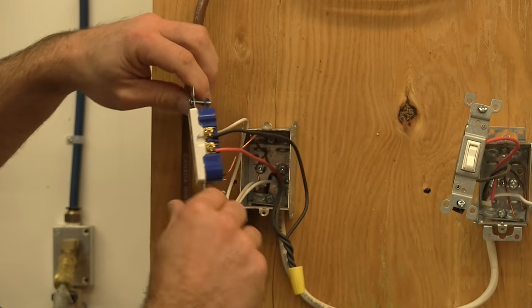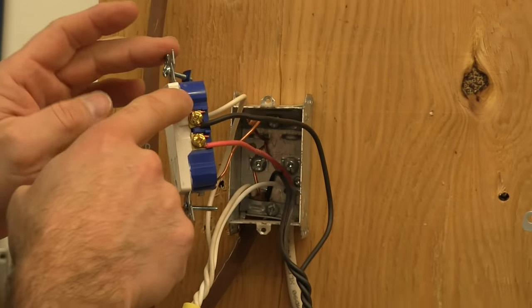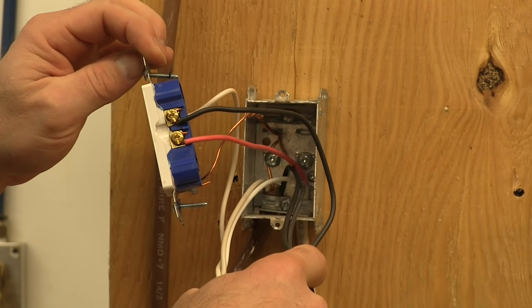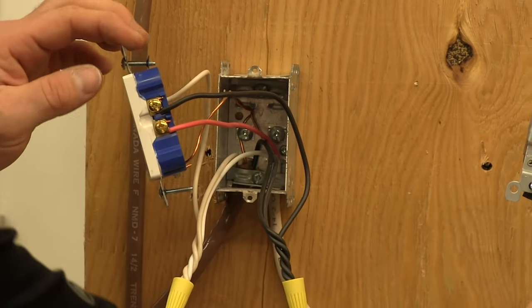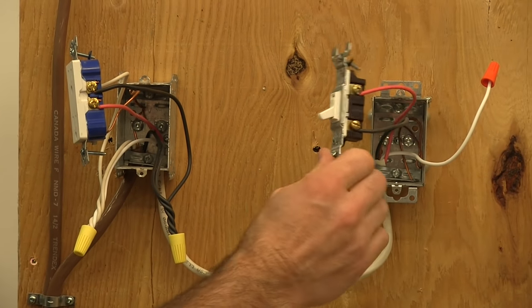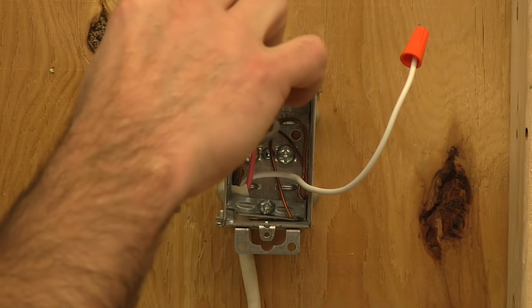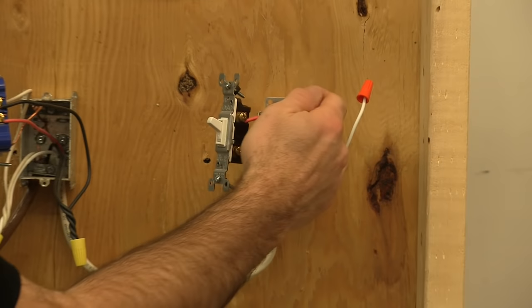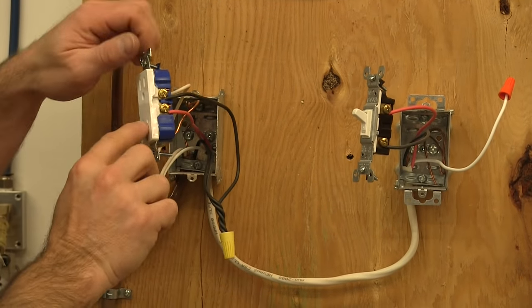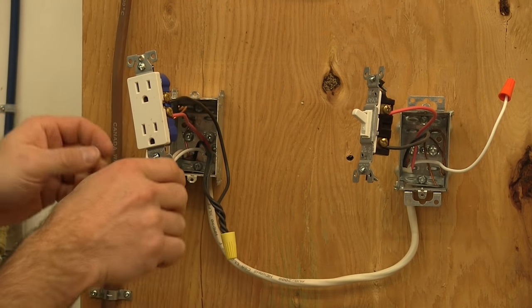Okay, so going back to how the power is running: here's our constant source coming in. This one's always going to be live as long as the breaker's on. Now we have another black wire heading over to our switch in a 14-3 cable that comes to the switch. Here's our black coming in—this is constant power. Then when we flip the switch, it'll travel back through the red all the way back to the receptacle, and that will power up your bottom receptacle. So I think that's pretty clear.